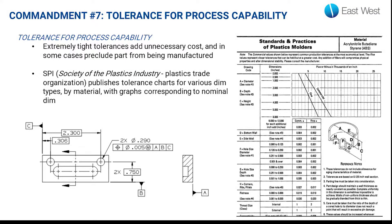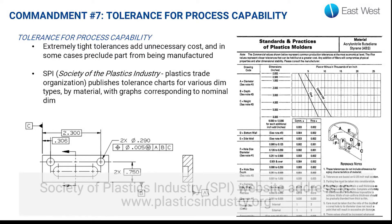Commandment number seven is tolerancing for process capability. Even seasoned engineers will provide prints or parts toleranced in such a way that the part is very difficult or impossible to manufacture. A key reference is the SPI — the Trade Association for the Plastics Industry — which has guidelines for dimensioning and tolerancing by material. For example, using the ABS guideline, based on the dimension it will tell you what is an appropriate tolerance. The reference is www.spi.org, where they have material-specific sheets to help you appropriately tolerance your mold.